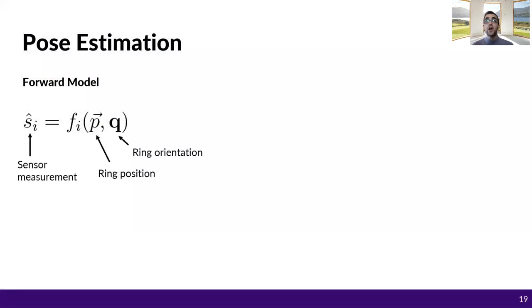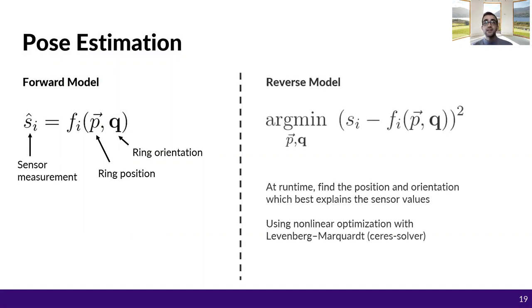Now, how can we relate these measurements to the ring pose? To do that, we start with a dipole model that calculates the sensor measurement as a function of the ring pose for each sensor location. Then, we use a non-linear optimizer to solve the best position and orientation given a set of sensor values.